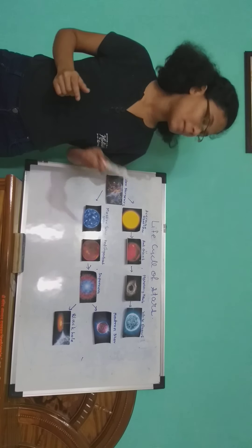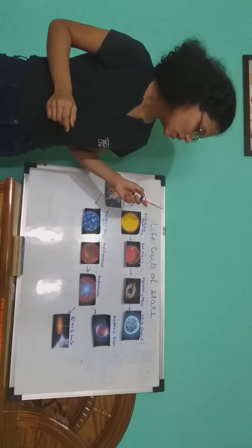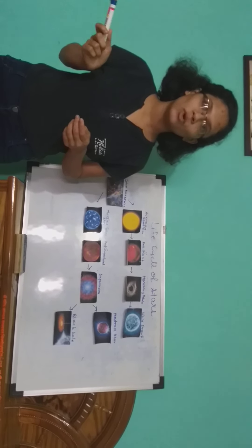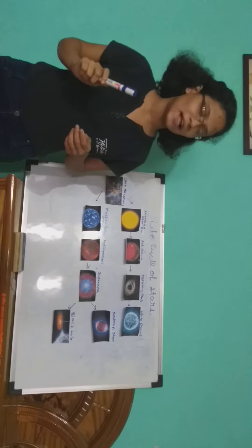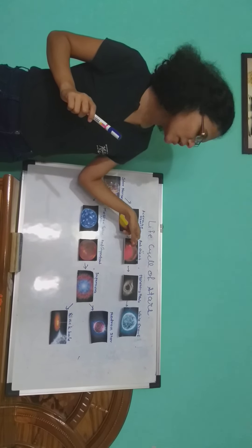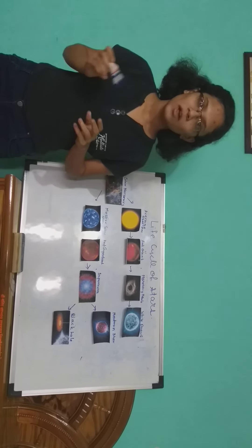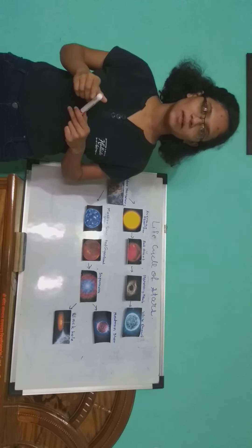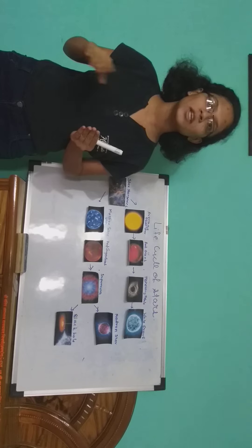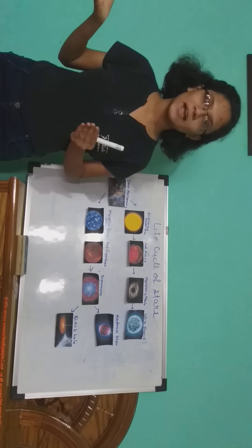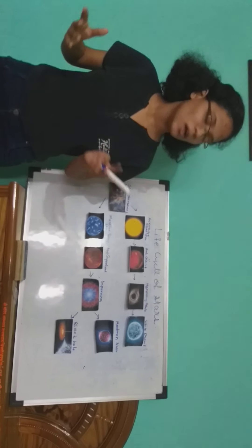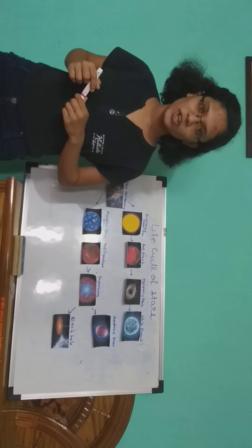First let's talk about the average size star. An example of this is our sun. Scientists predict that after 5 billion years our sun is going to end its life — it's going to get converted into a red giant. The hydrogen gas which is present inside our sun is continuously burning and turning into helium gas. So when the hydrogen gas runs out of fuel, it's going to get converted into a red giant.